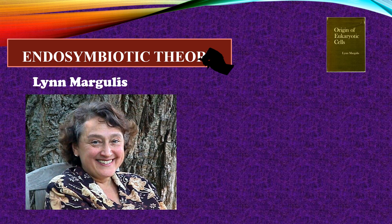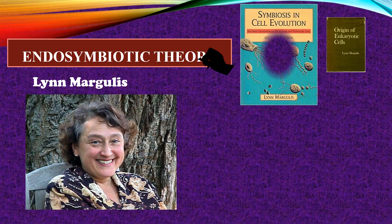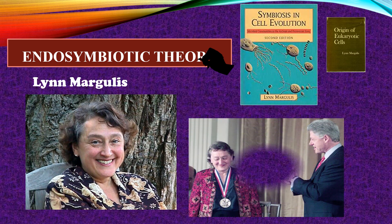Her endosymbiotic theory of eukaryotic cells developed a revolution in the modern concept of how life arose on Earth. Margulis transformed our understanding of the evolution of cells with a nucleus. She expanded on the theory in her 1981 book 'Symbiosis in Cell Evolution,' in which she explains how endosymbiosis is a major driving factor in the evolution of organisms.